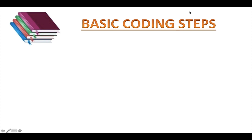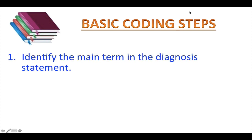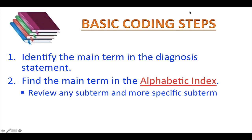Here are the basic coding steps. First, you need to identify the main term in the diagnosis statement — you already know how to do this from the first lesson. Next, you locate the main term in the alphabetical index, which is volume 2 of your book. For those of us who do not have the book and currently use the PDF file, you just open the file instead. Remember, the main terms are listed alphabetically and printed in bold type and begin with a capital letter.